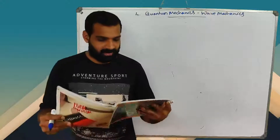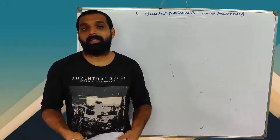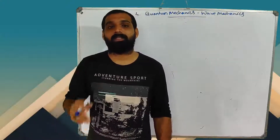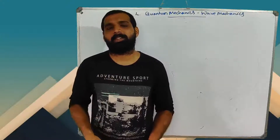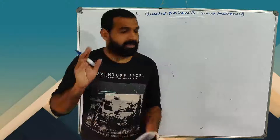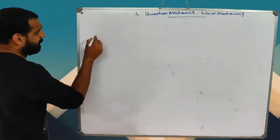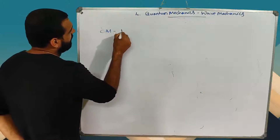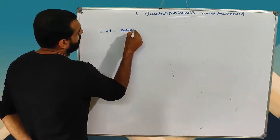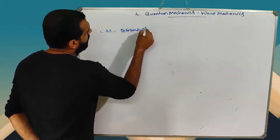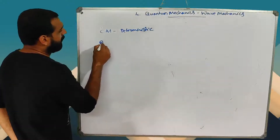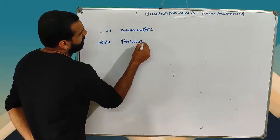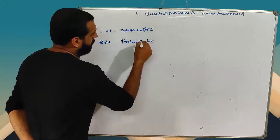The fundamental difference between classical mechanics and quantum mechanics: classical mechanics is deterministic, and quantum mechanics is probabilistic.